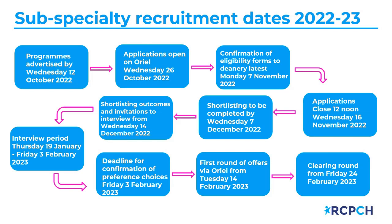Shortlisting will be completed by the 7th of December, and outcomes and interview invites are sent out to all applicants from Wednesday the 14th of December through Oriel. The interview period is two and a half weeks, from Thursday the 19th of January to Friday the 3rd of February. The deadline for confirmation of preference choices is Friday the 3rd of February. The first round of offers will be released via Oriel from Tuesday the 14th of February, with a clearing round from Friday the 24th of February for any unfilled posts.